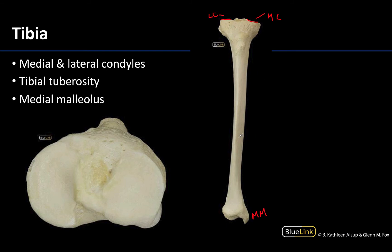Back to this image — this is a straight anterior view, and I know that because I can clearly see the tibial tuberosity in this region. This is the distal attachment site for the quadriceps tendon, and that specific portion from the patella down to the tibial tuberosity is referred to as the patellar ligament. You can actually palpate your own tibial tuberosity — you'll find your patella and then moving distally you should feel the tibial tuberosity projecting anteriorly.